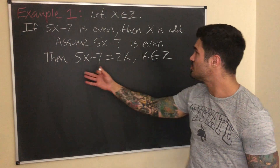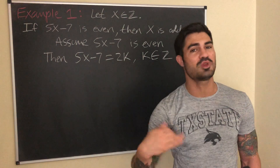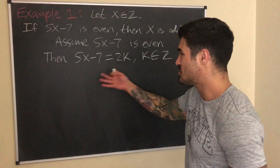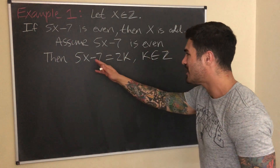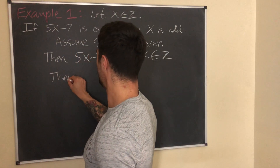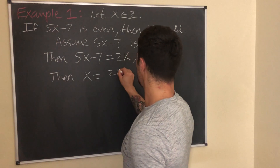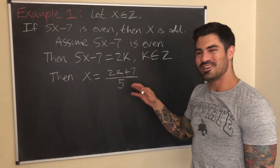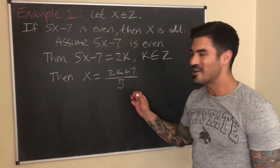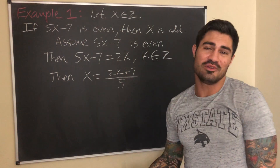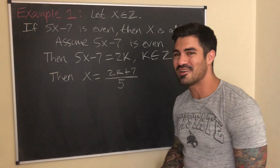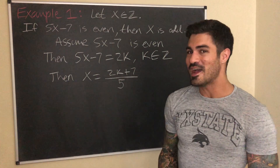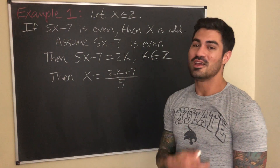We need to show that x is odd, meaning x equals 2k plus 1. So let's solve for x: adding 7 and dividing by 5, we get x equals (2k plus 7) over 5. Now you can see the roadblock — it's tricky to tell if this is odd, or even if it's an integer at all. I'm stuck. At this point I'd erase everything and try the contrapositive instead.